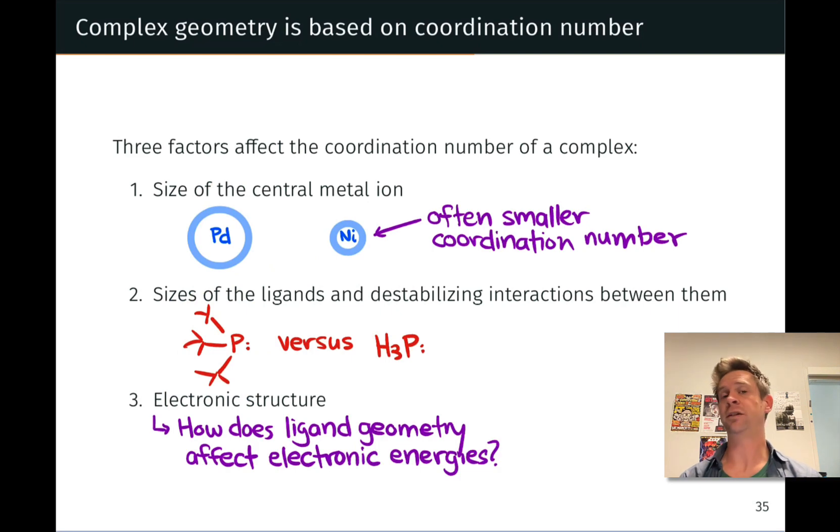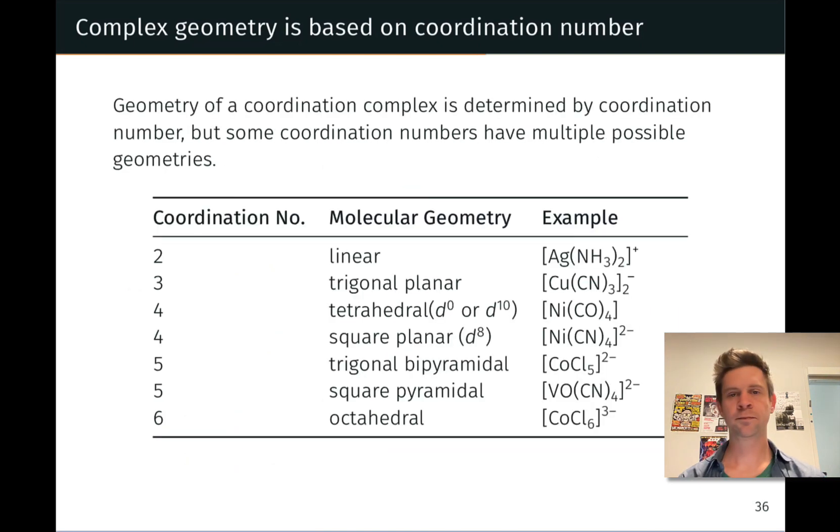So the geometry of a coordination complex is determined by the coordination number to some extent, but some coordination numbers have multiple possible geometries. Let's start with the smallest possible coordination number, which is 2.